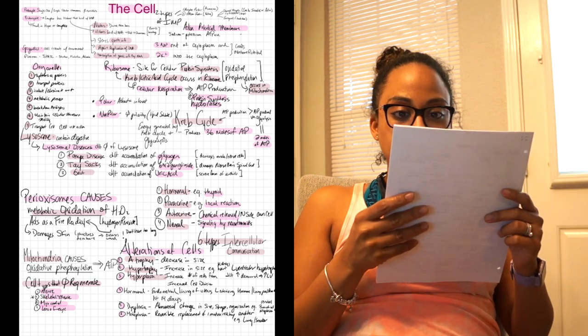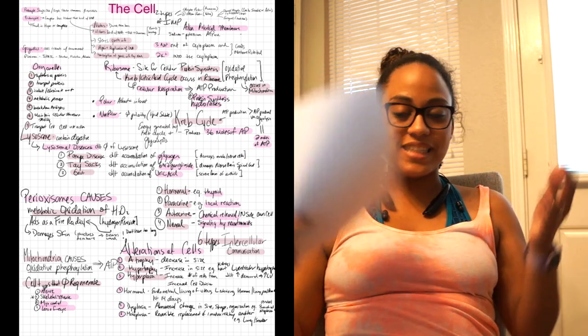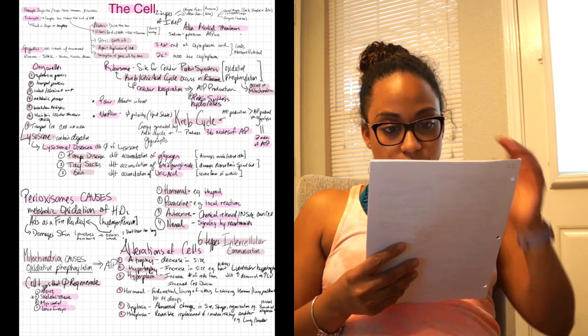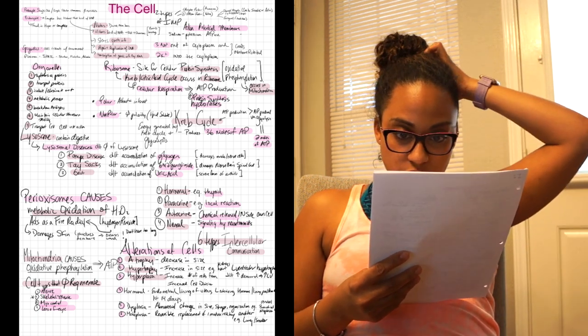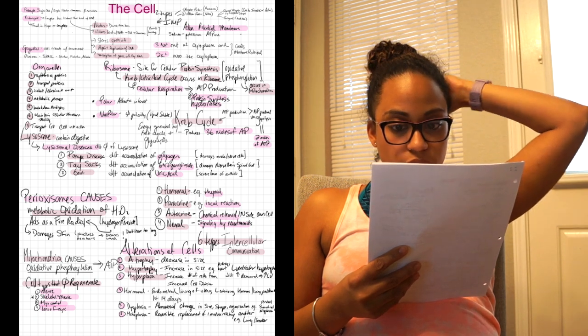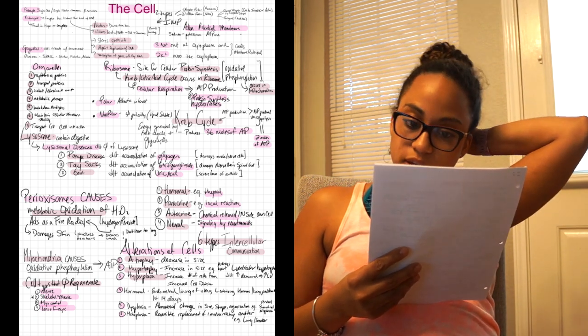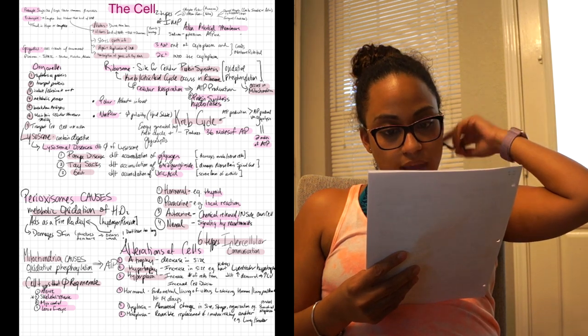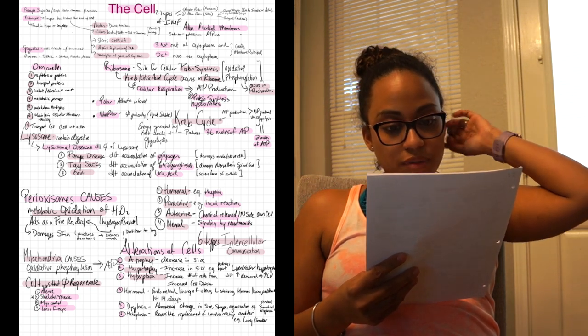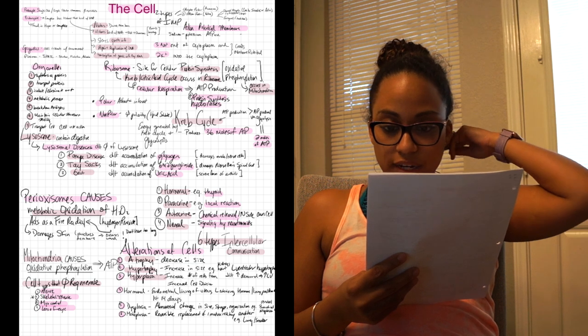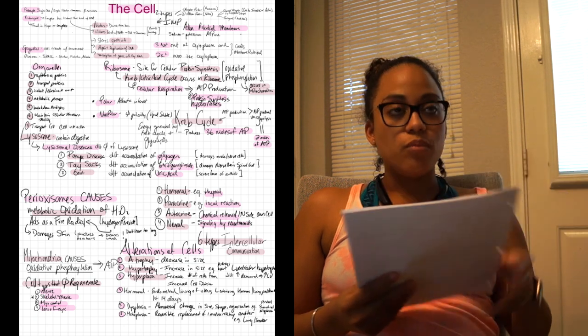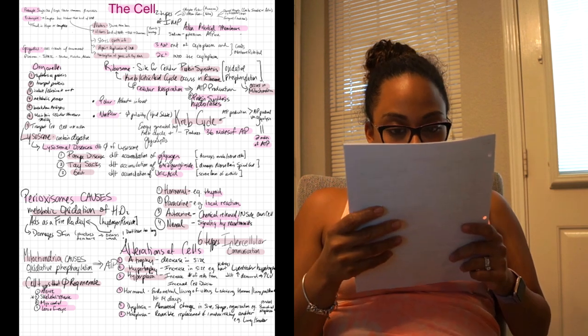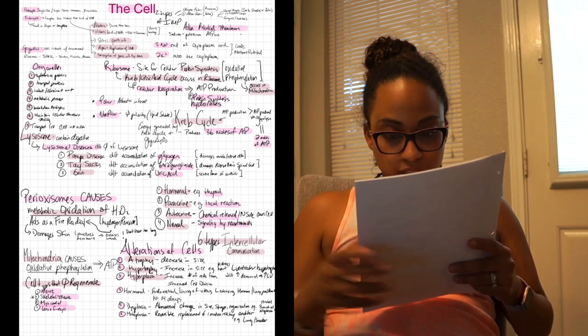So we're talking about action potential membrane, referring to the sodium and potassium pump. Three sodiums out of the cytoplasm and then two potassiums go into the cytoplasm, therefore creating a membrane potential. So more is coming in than coming out, therefore you're creating that.